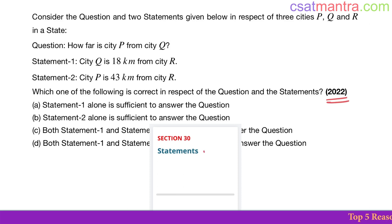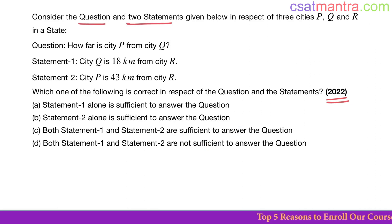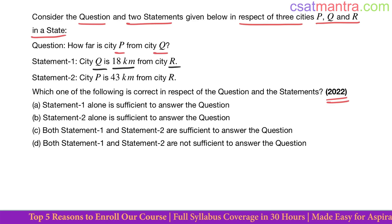2022 question based on statements. Consider the question and two statements given below in respect of three cities P, Q, and R in a state. Question: How far is city P from city Q? Statement 1: City Q is 18 kilometers from R.